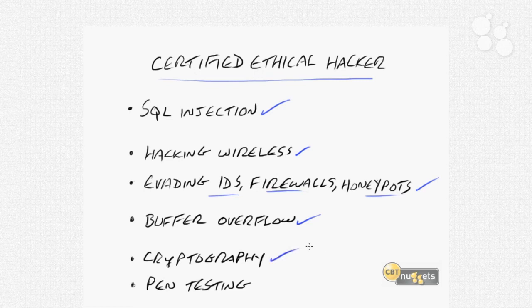Cryptography is important to understand as well, because you need to understand the difficulty involved in some cryptography — it might not be worth your while to directly hack against something. Or if someone has used weak cryptography, you might be able to use a tool that can decrypt some of those things quite easily. We'll also take a look at pen testing. That's really what we do as certified ethical hackers — we're trying to do a penetration test. I want to emphasize we're trying to be ethical here; we're not trying to hack into things we're not supposed to. We likely have a contract to get in there, and we're just testing to see what a black hat hacker would do.